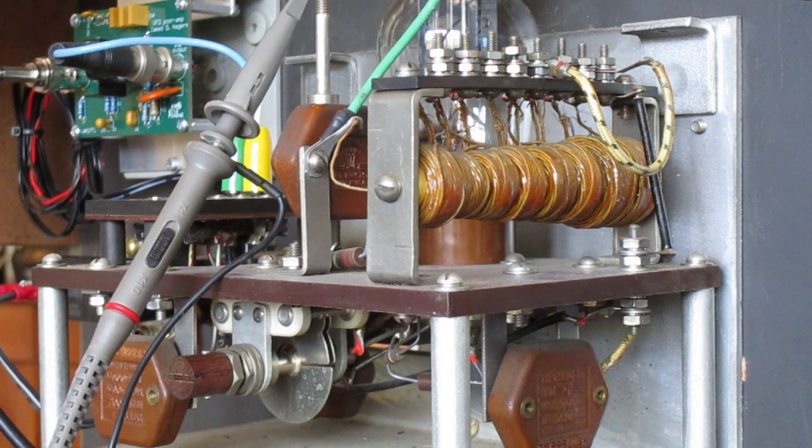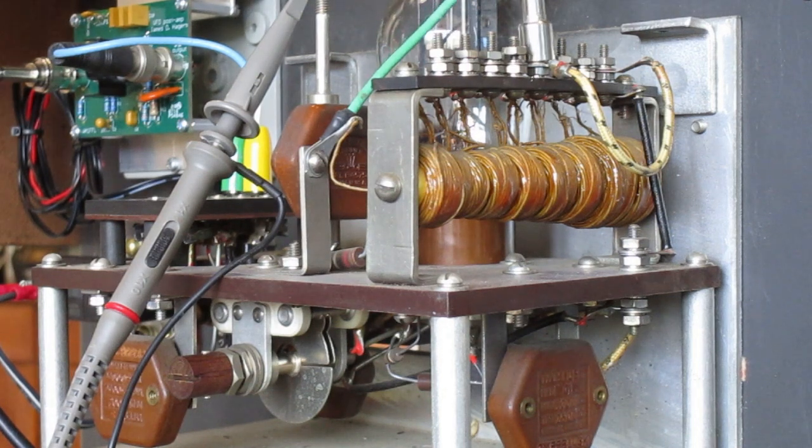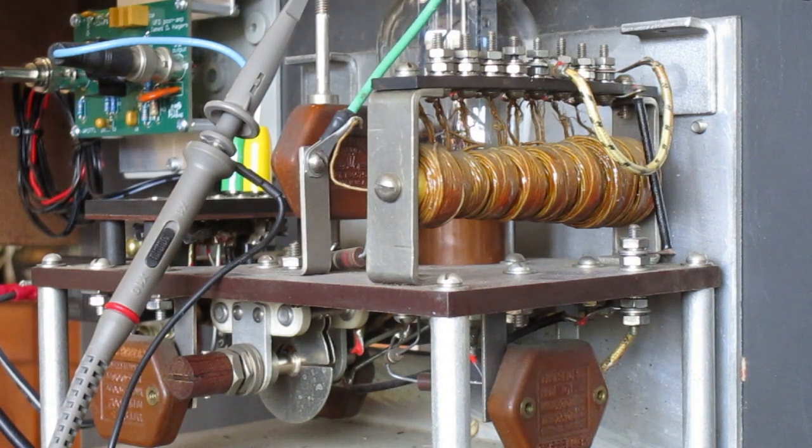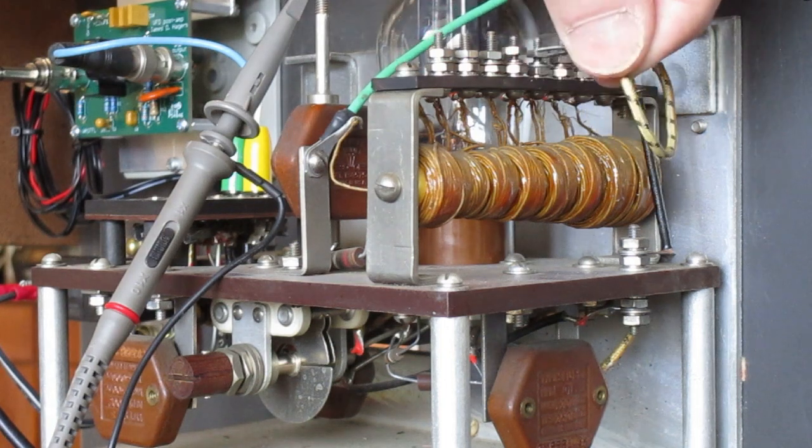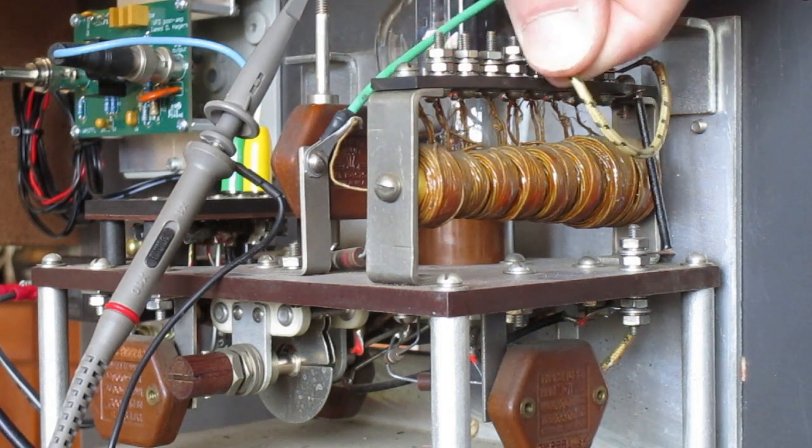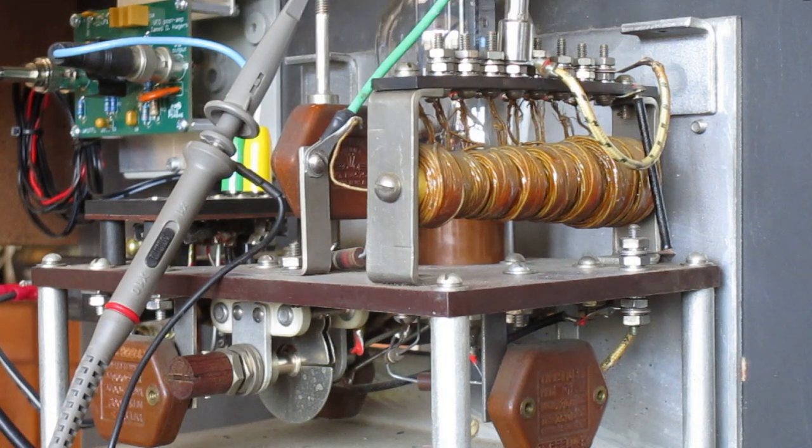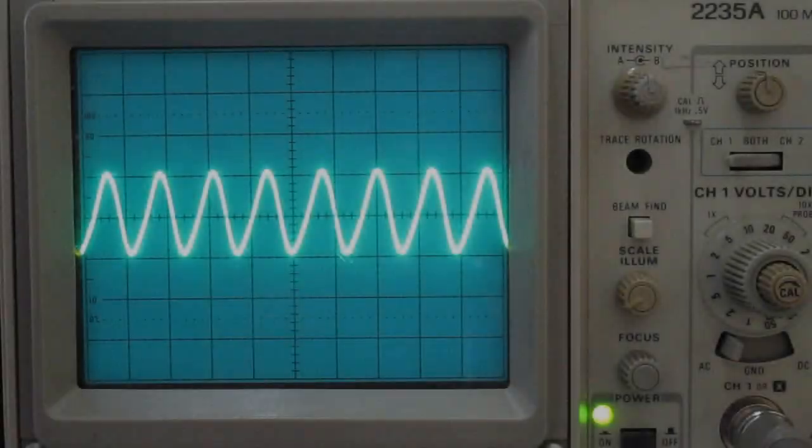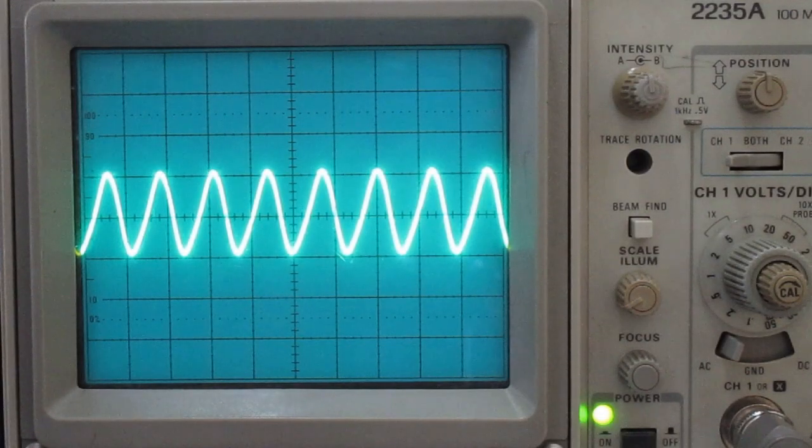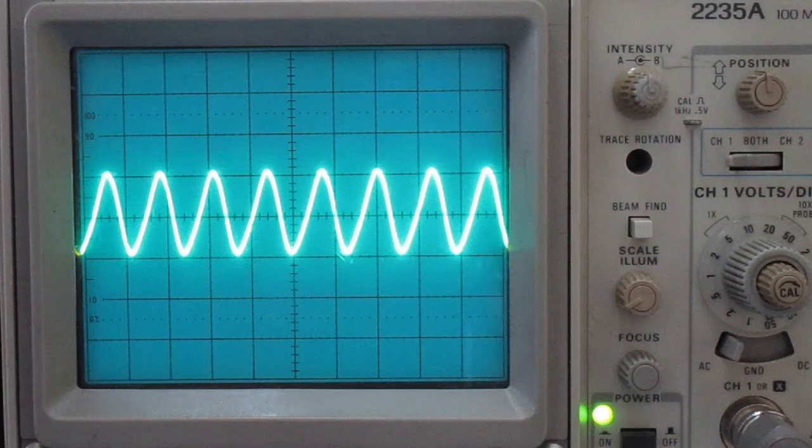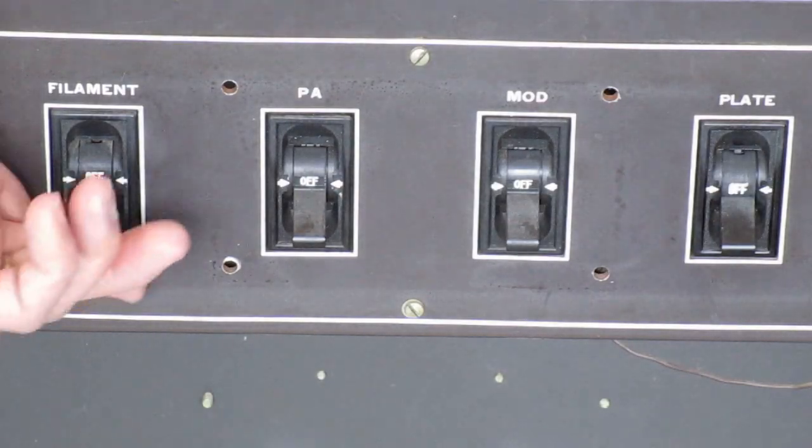So we'll unscrew the existing connection on the plate choke and short out one additional turn on the choke in order to lower the inductance and thereby possibly raise the frequency response of the plate choke. But when we look at the oscilloscope, we see that the signal is much weaker than it was in the original position, so we'll move that back.